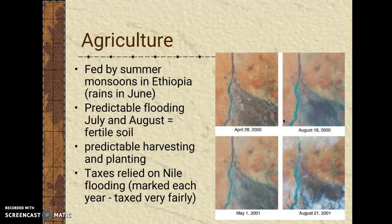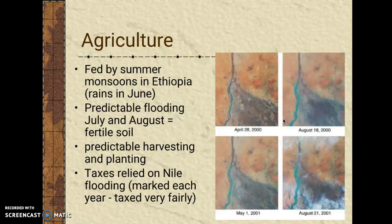In terms of agriculture, the Nile River is fed by summer monsoons in Ethiopia — it rains in June and then there is very predictable flooding in July and August, leaving fertile soil to harvest. What was not predictable was the amount of flooding. The Egyptians used this to their advantage: kings and pharaohs were very focused on taxing their people in a way that made sense and didn't put strain on them, in keeping with their values of order, harmony, and balance. Every year that the river flooded, they would mark how much it flooded and tax people appropriately — more taxes if it flooded a lot, fewer taxes if it flooded less.